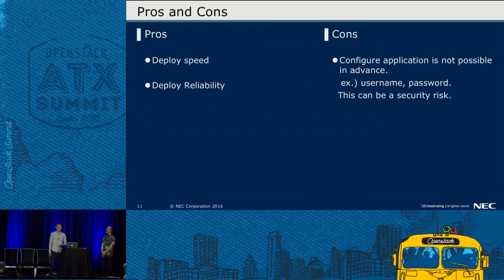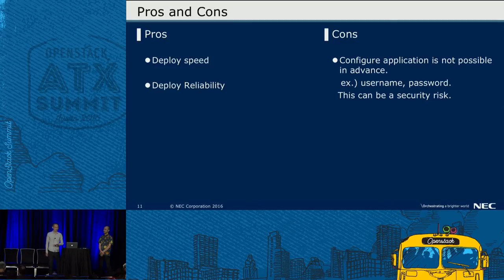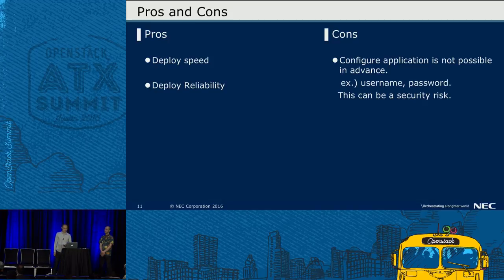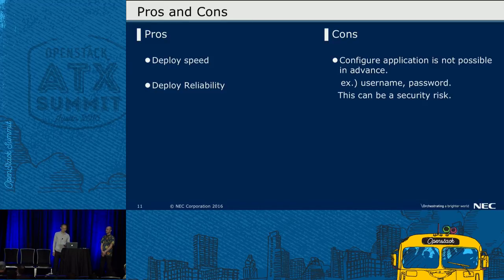The pros and cons are derived from the fact that the image includes the application beforehand. The advantages of using Glance are: first, deploy speed — application users can use the application in a very short time. Second, deploy reliability — application is installed in the image, so the application is certainly installed. On the other hand, the disadvantage is that configuring the application is not possible in advance. For example, you cannot configure username or password before boot. This can be a security risk.